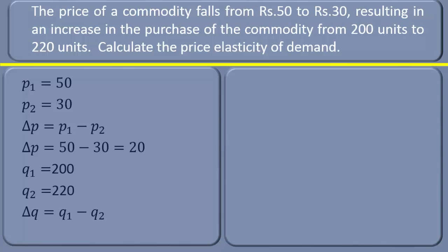The formula to find the change in quantity is q1 minus q2, that is initial quantity minus new quantity. Never change the order in finding out the change in quantity. In our problem, the change in quantity is 200 minus 220 equals minus 20 units.